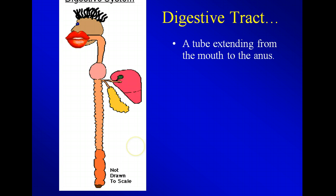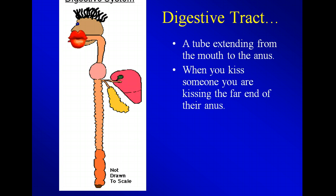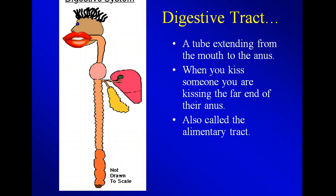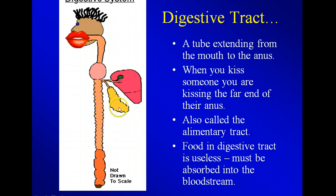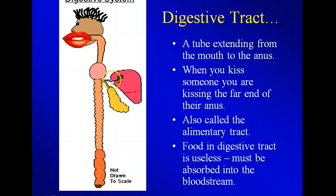The digestive tract goes from the mouth to the anus — it's also called the alimentary tract. Food in the digestive tract is useless if it doesn't get into the cells. The liver and the pancreas are accessory organs, meaning food doesn't travel through them, but their secretions are very important to the digestive process.